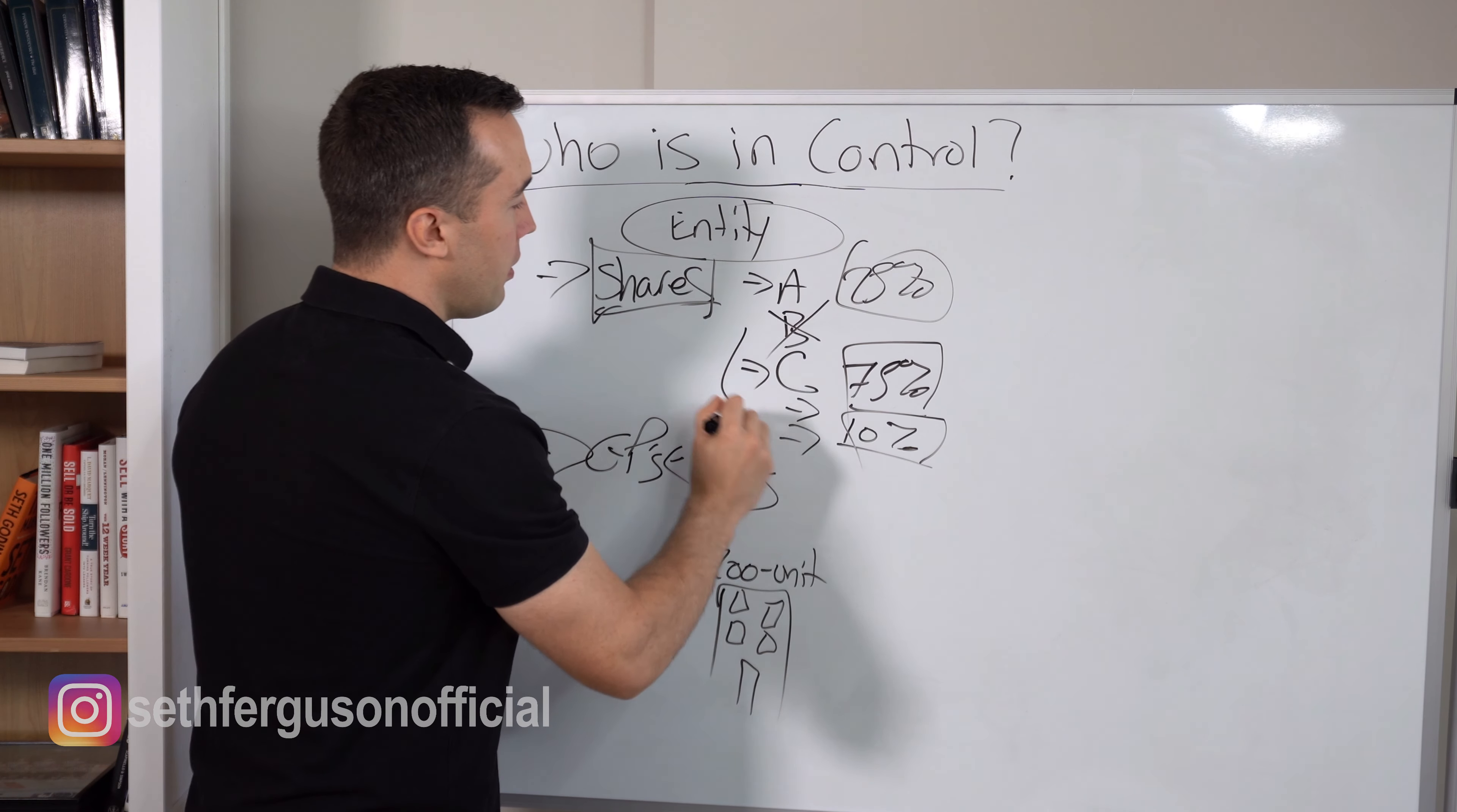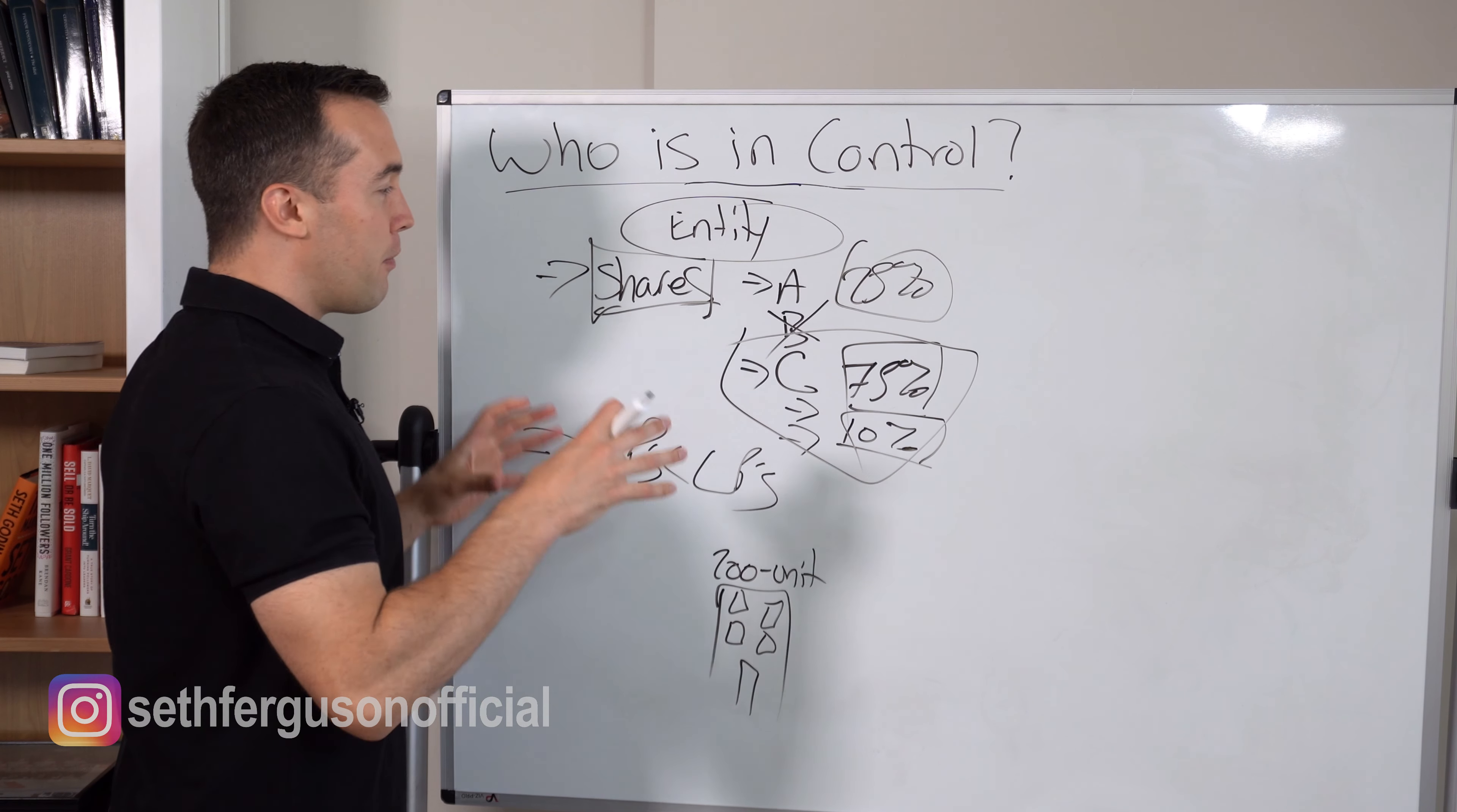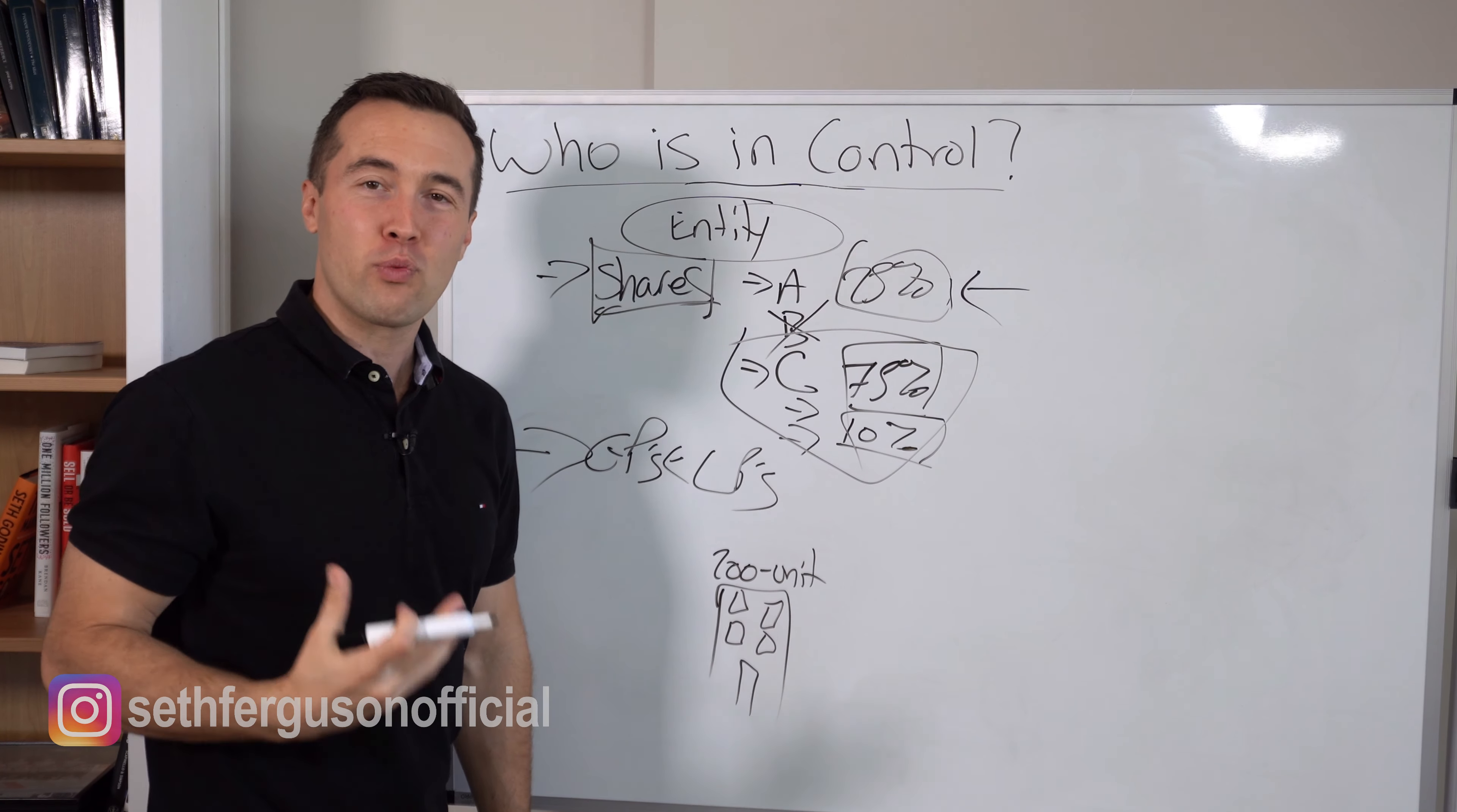We know who a GP is, we know who an LP is, but how does this relate to shares? Well, generally speaking, the limited partners, the LPs, will acquire Class C shares. This is the class of share that will have a preferred return, most likely. They will participate in the upside of the equity, unless there's a couple different classes of that share. When we talk about control, it all comes down to voting rights.